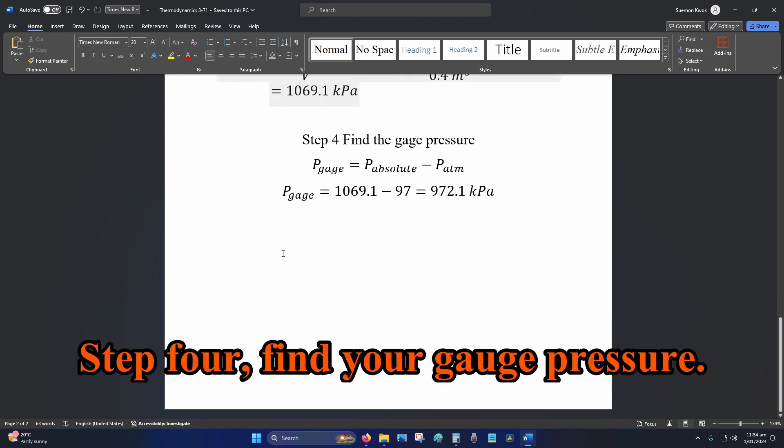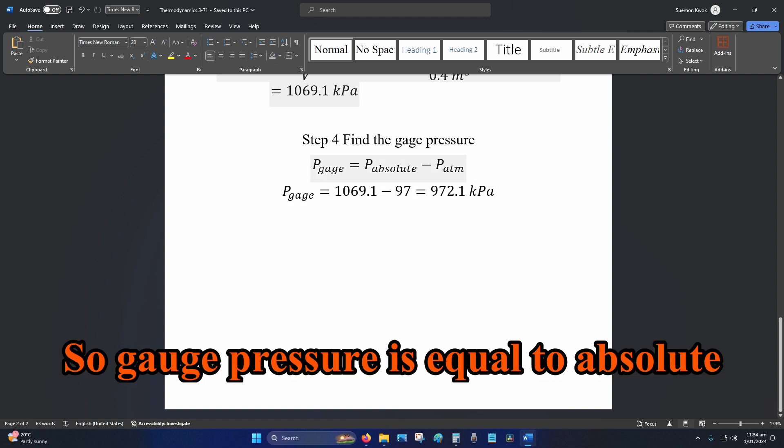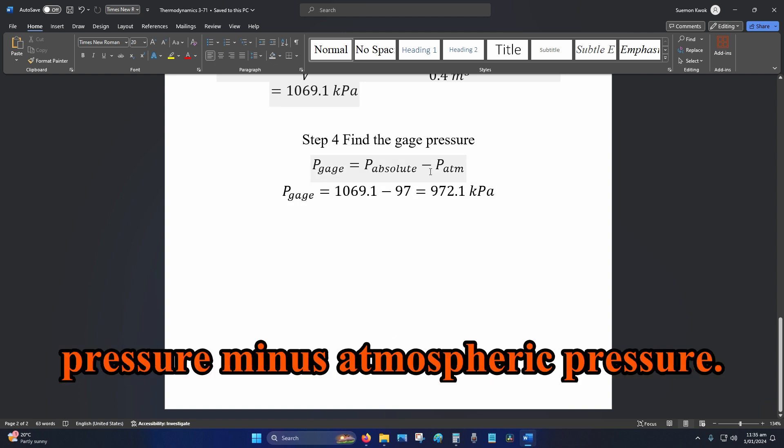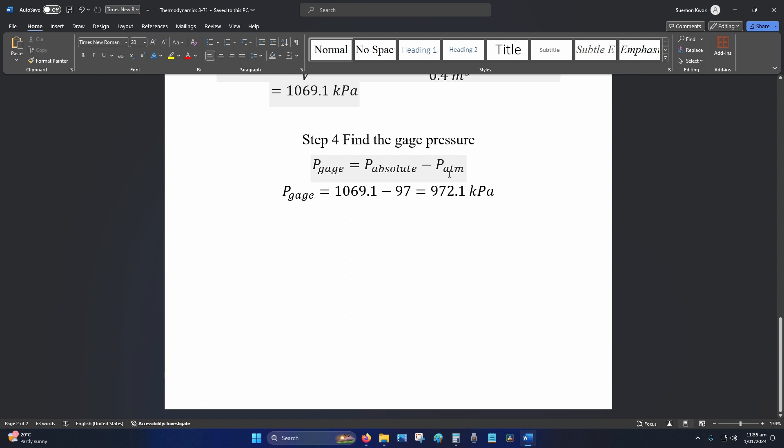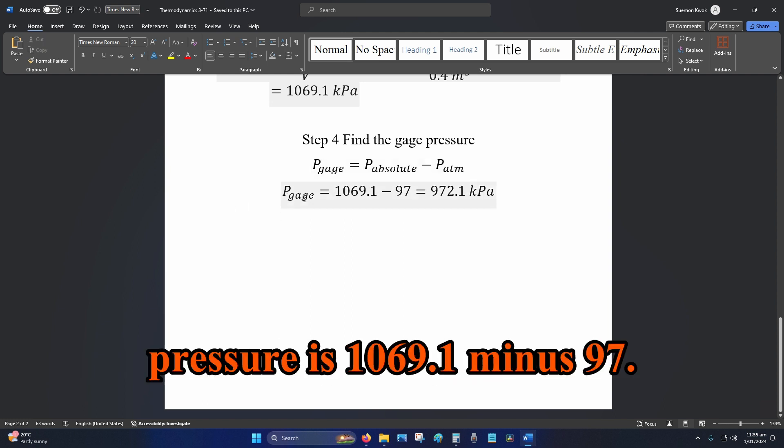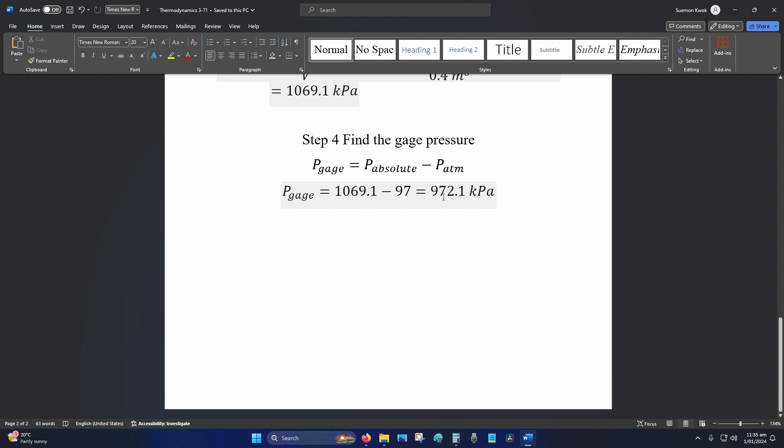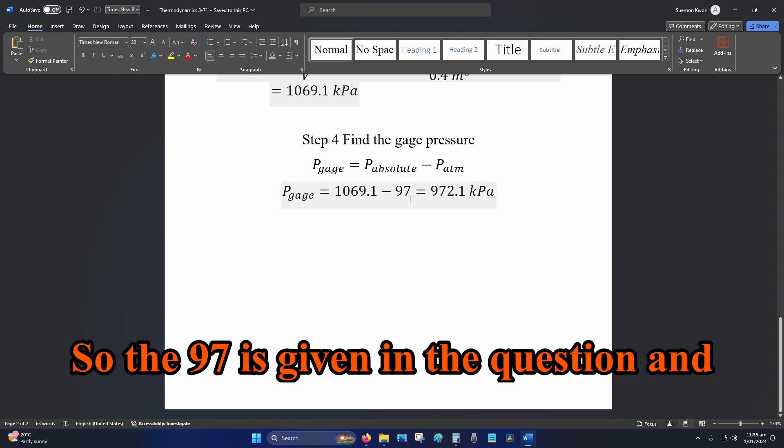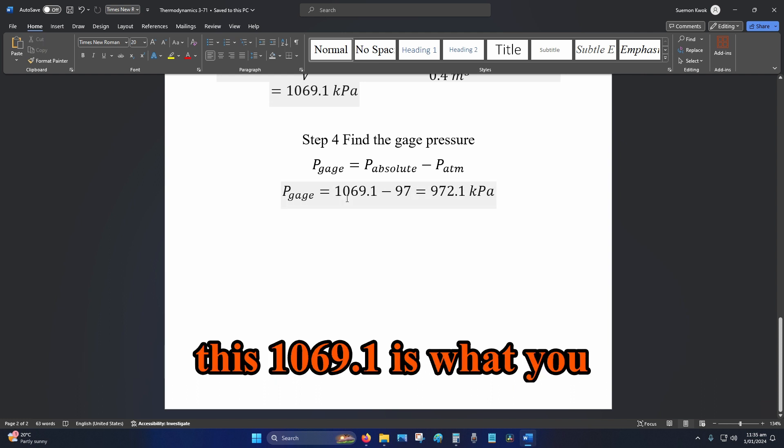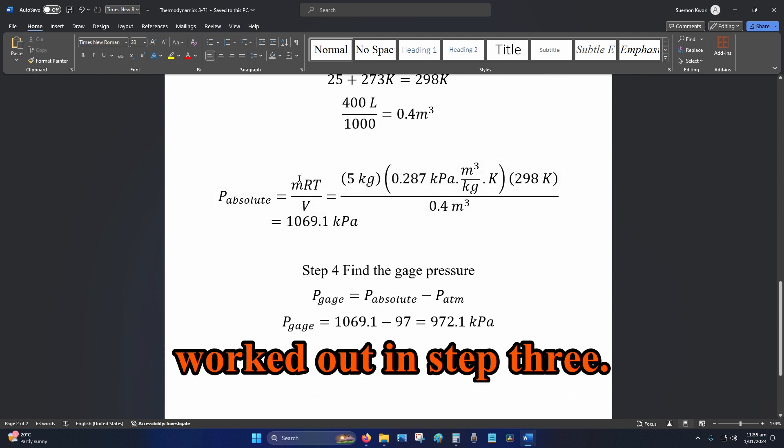Step four: find your gauge pressure. So gauge pressure equals absolute pressure minus atmospheric pressure. So your gauge pressure is 1069.1 minus 97. The 97 is given in the question and this 1069.1 is what you worked out in step three.